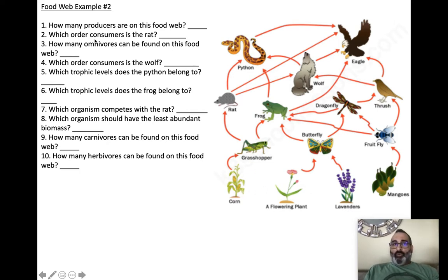Number two, which order consumer is the rat? Let's go through the rat. The rat, right there. There's a path to get there. There's one path to get there. The energy goes from corn to grasshopper to rat. So zero, no number here. That's not a consumer. Zero, one, two. The rat is a second, a two. That is the number the rat eats at, the second order.